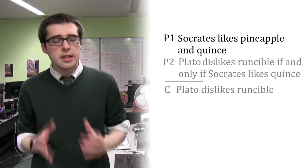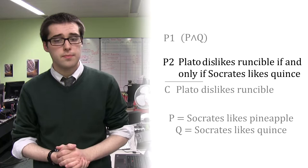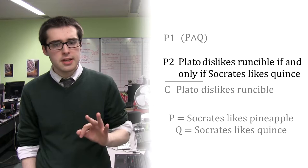The second premise also contains two propositions: Plato likes runcible and Socrates likes quince. The first proposition is negated using the dis prefix. Let's give its non-negated form a sentence letter in our key.